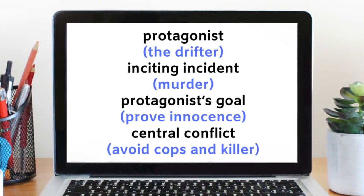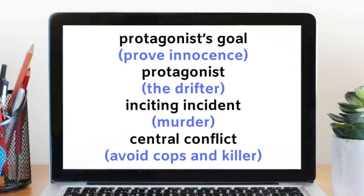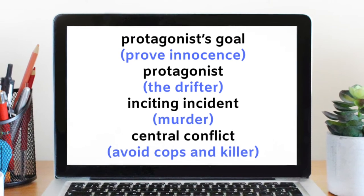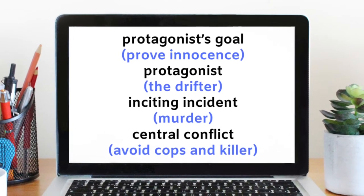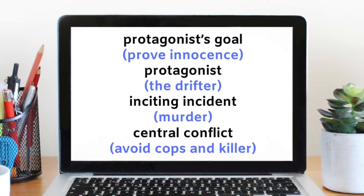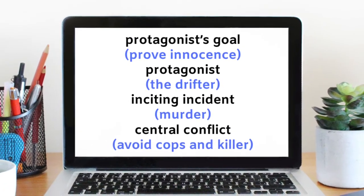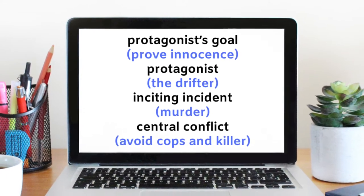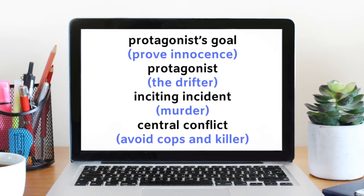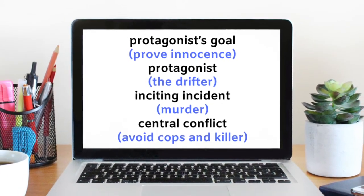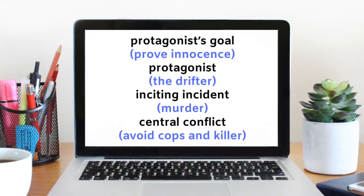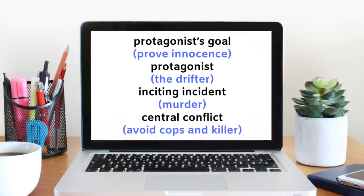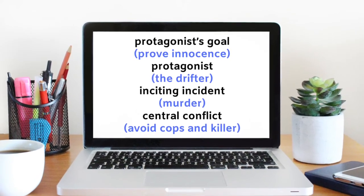An example of this would be: 'To prove his innocence' — that's the protagonist's goal — 'a drifter' — the protagonist — 'who's been accused of murder' — the inciting incident — 'must evade the authorities while searching for the identity of the true killer.' That's the central conflict.